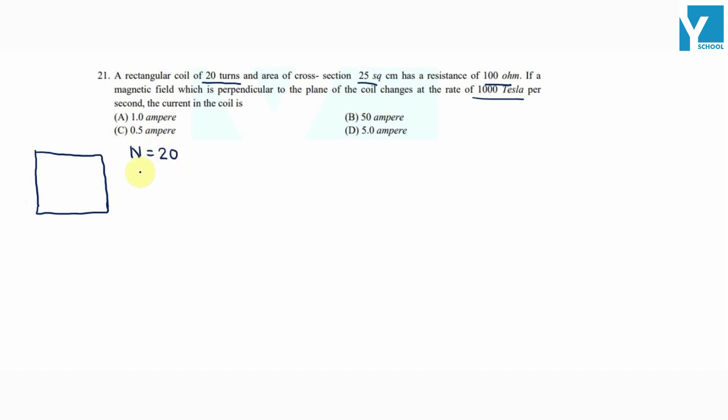The rectangular coil has number of turns N equals 20. Area of cross section is 25 cm², which is 25×10⁻⁴ m². The resistance is 100 ohms.